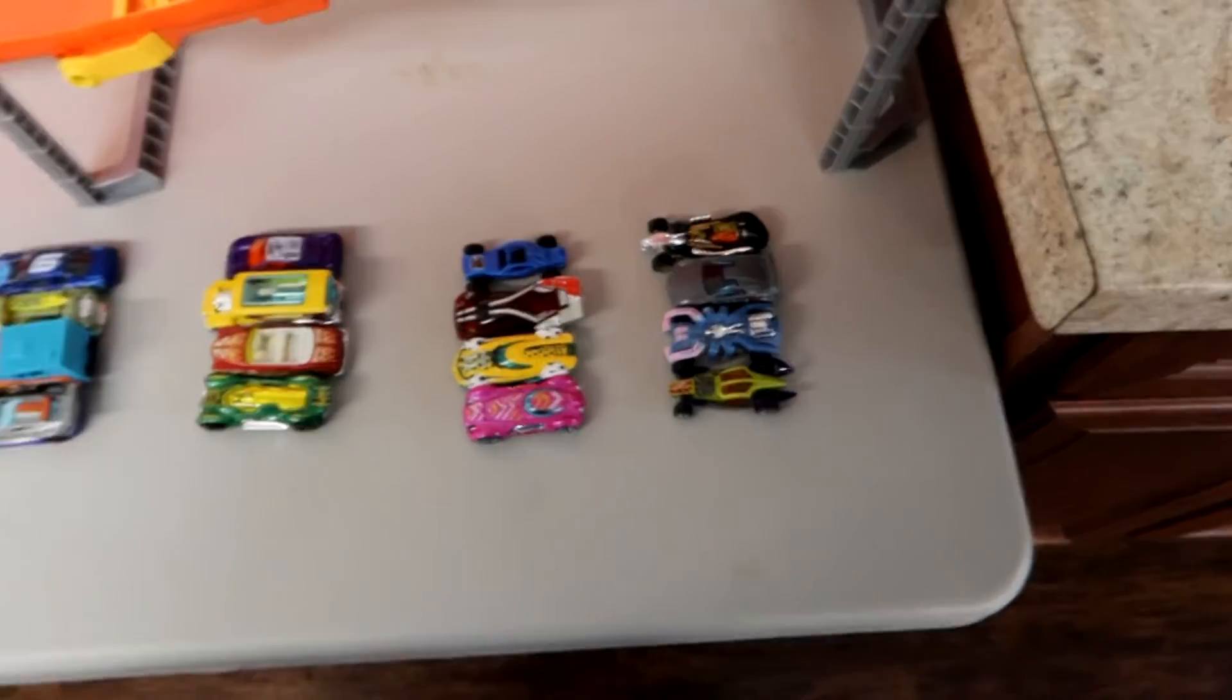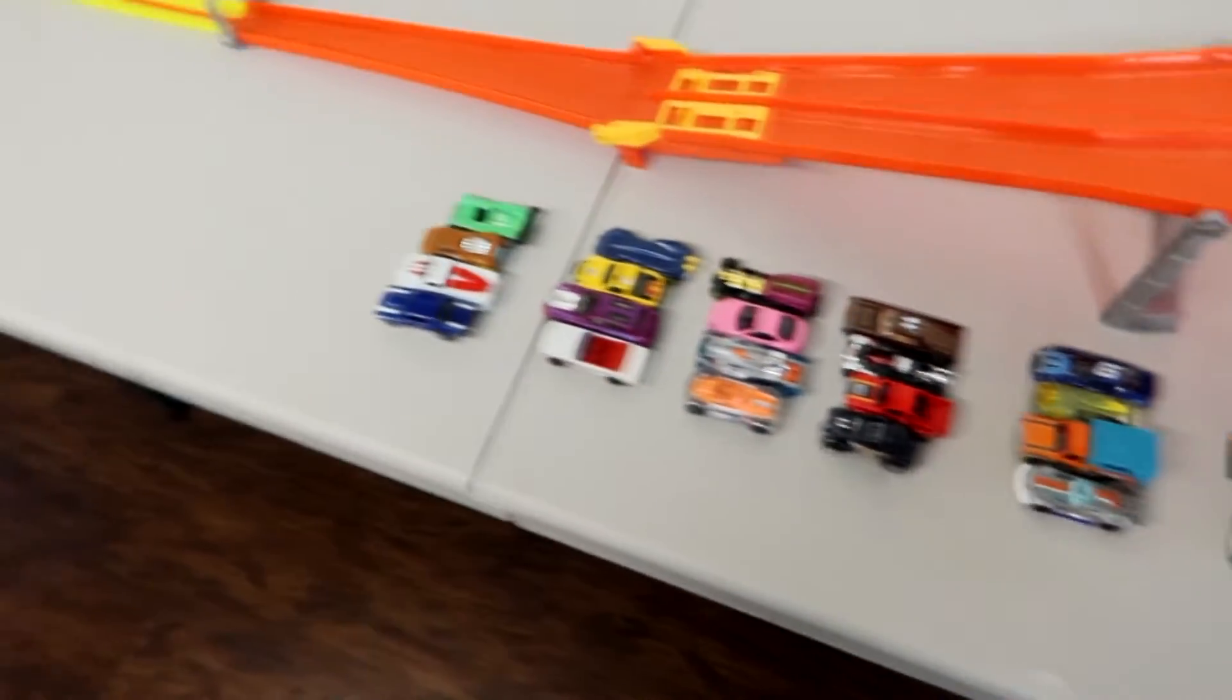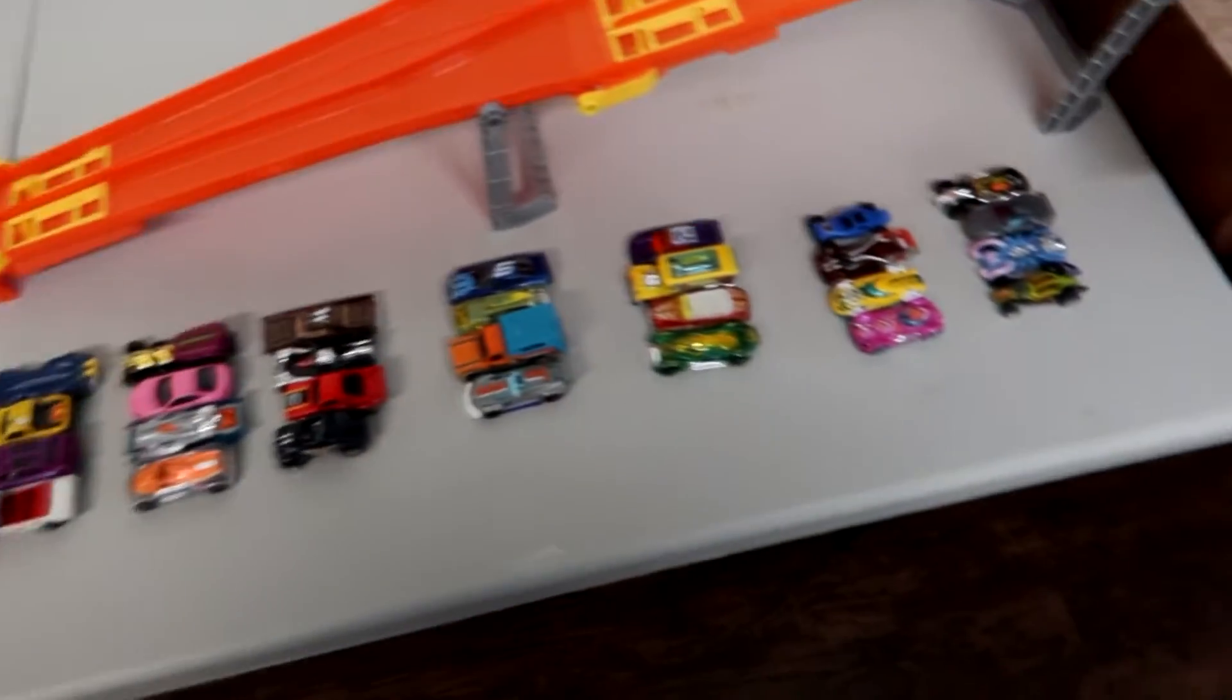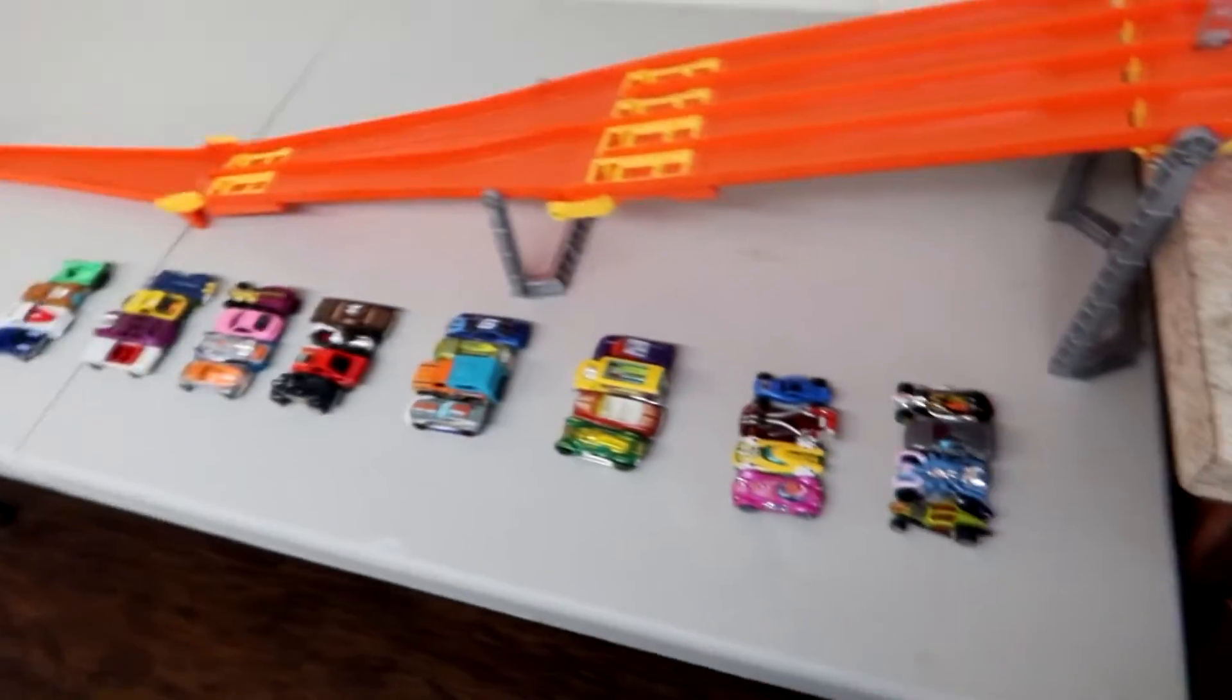Bada bing bada boom. Here we go. 1, 2, 3, 4, 5, 6, 7, 8 total groups of cars. 8 times 4 is 32.